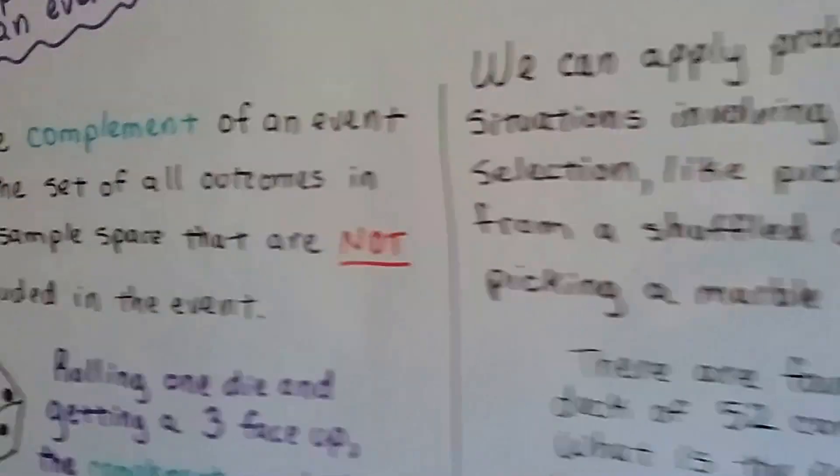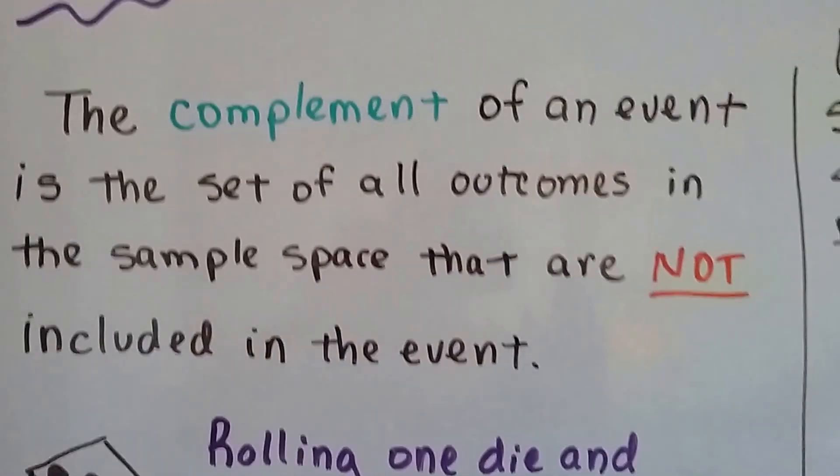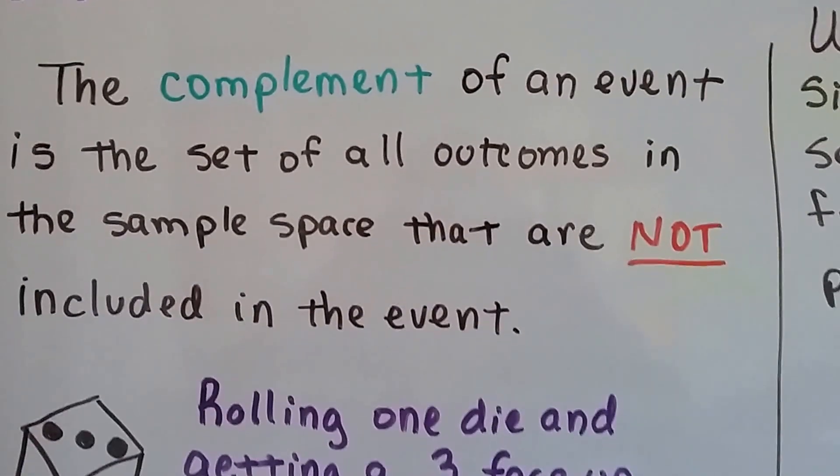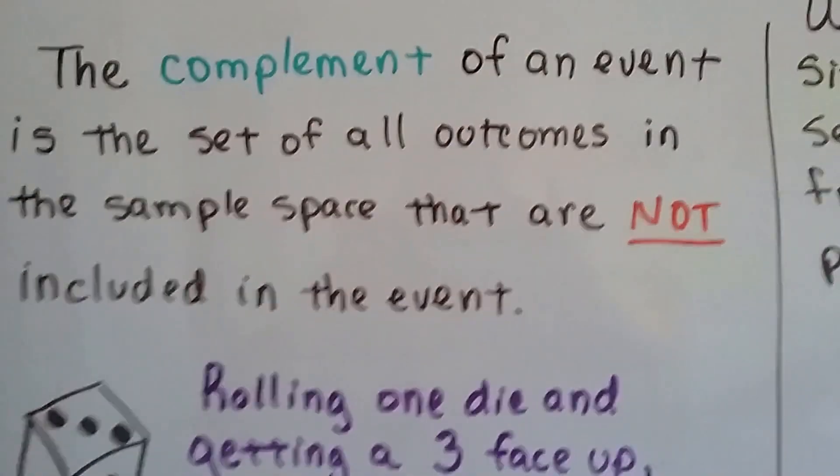Now we have a new word: complement. Notice there's no i's in it—it's got two e's in this complement. The complement of an event is the set of all outcomes in the sample space that are not included in the event.